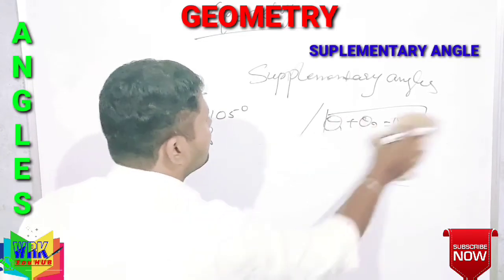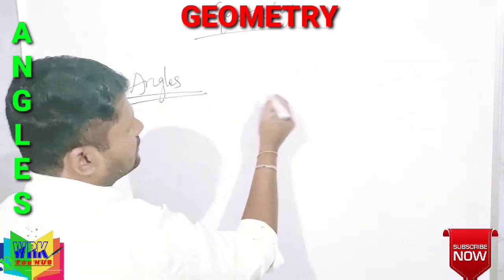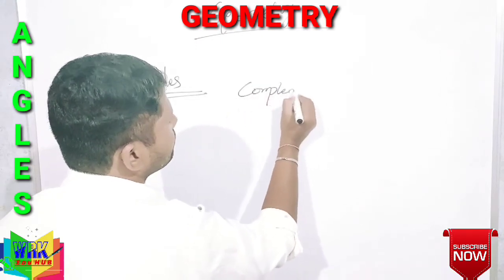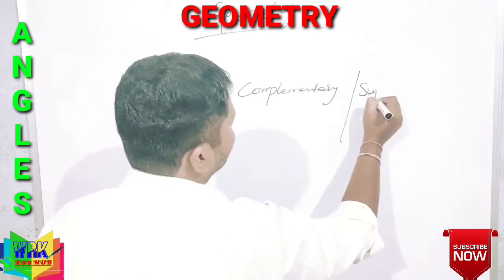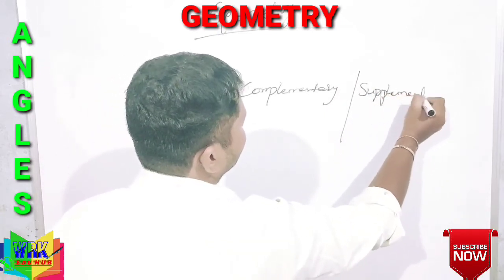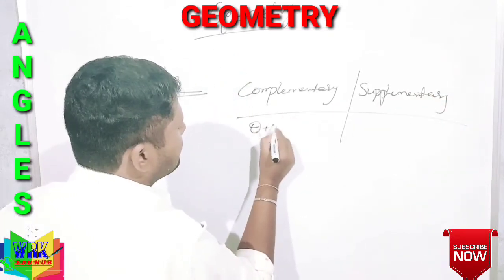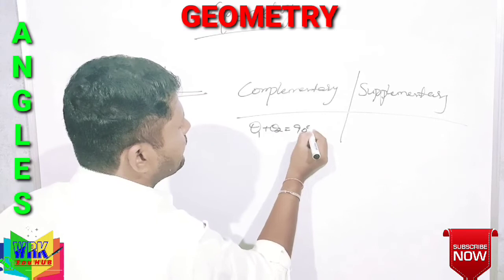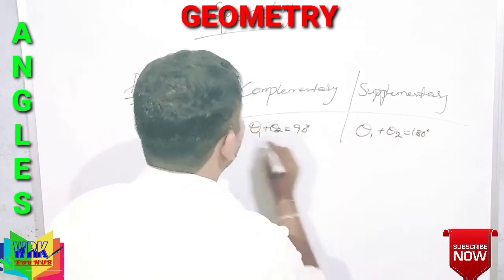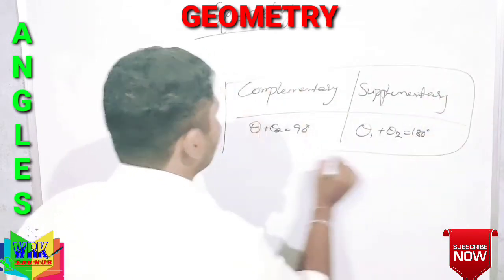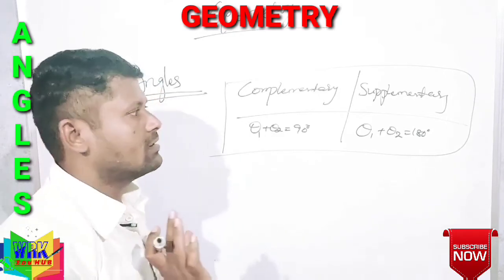To summarize: complementary angles means theta 1 plus theta 2 equals 90 degrees. Supplementary angles means theta 1 plus theta 2 equals 180 degrees. These are very, very important points.